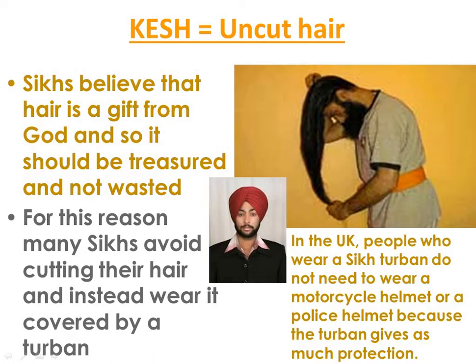They're called the 5 Ks because they all start with the letter K. The first one is Kesh, which is uncut hair. Sikhs believe that hair is a gift from God and so it should be treasured, not wasted. For this reason, many Sikhs avoid cutting their hair and, particularly male Sikhs, wear it covered by a turban. In the UK, people who wear a Sikh turban do not need to wear a motorcycle helmet or a police helmet, because the turban gives as much protection.